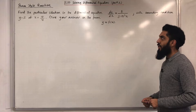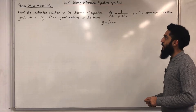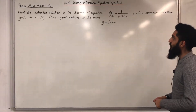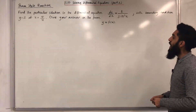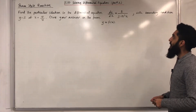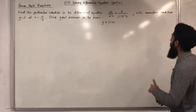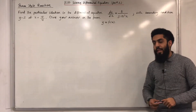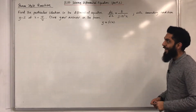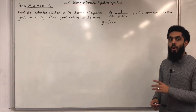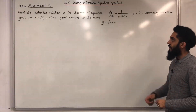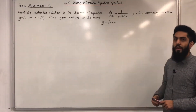Find a particular solution to the differential equation dy/dx = 3 / (y cos²x), with boundary condition y = 2 at x = π/4. Give your answer in the form y = f(x).